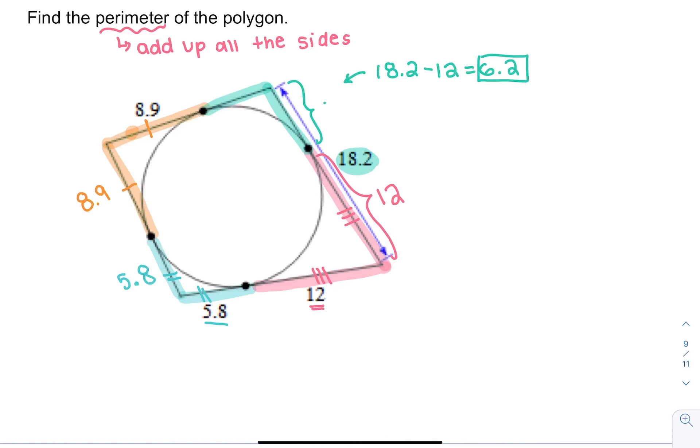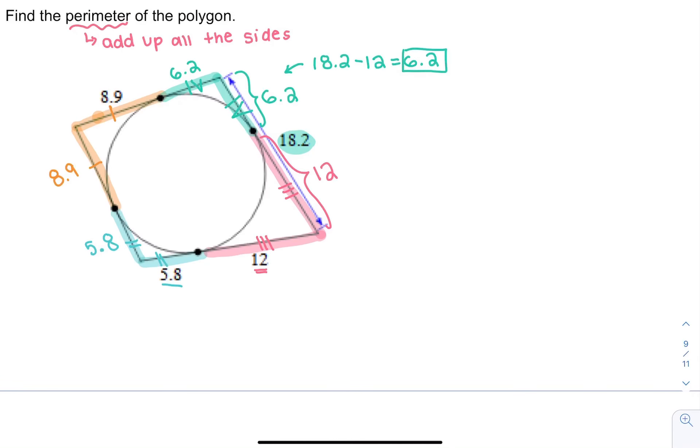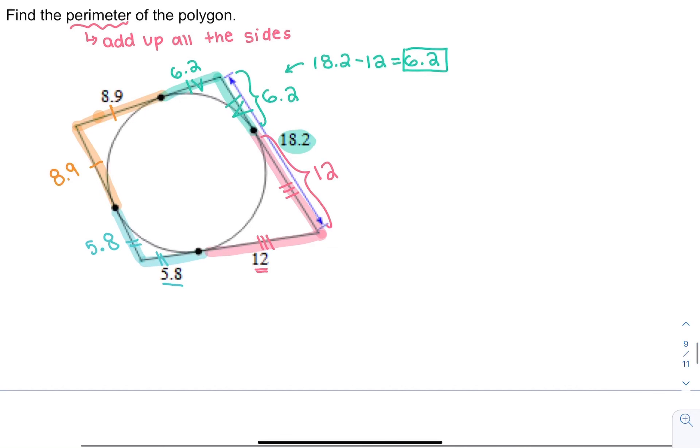Which means this blue side is 6.2. And last up, if that side's 6.2, this side's 6.2. Now I'm going to add up all the sides. There's a few ways you can do this. You can add the 18.2 side, or you can just say I have two 6.2s, I have two 12s, I have two 5.8s, and I have two 8.9s. Any way you want to add them up, it's totally fine.